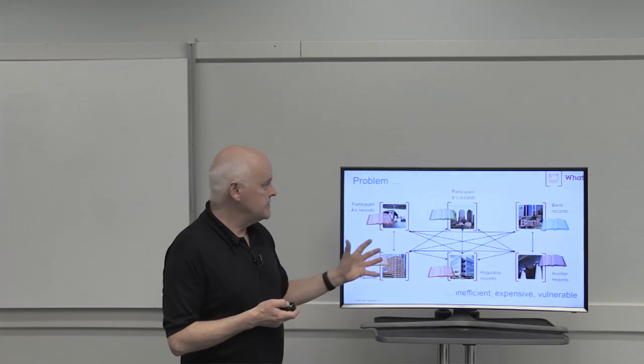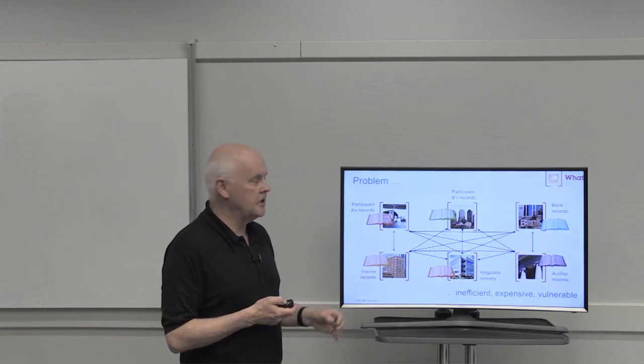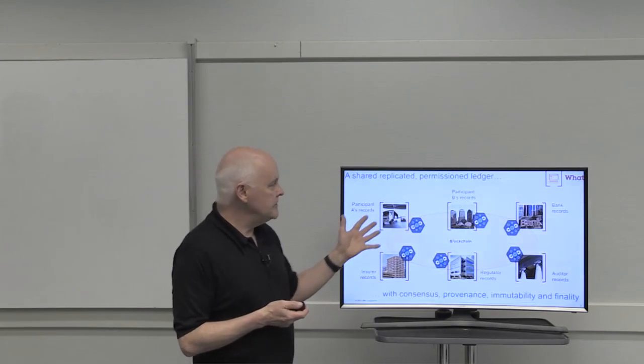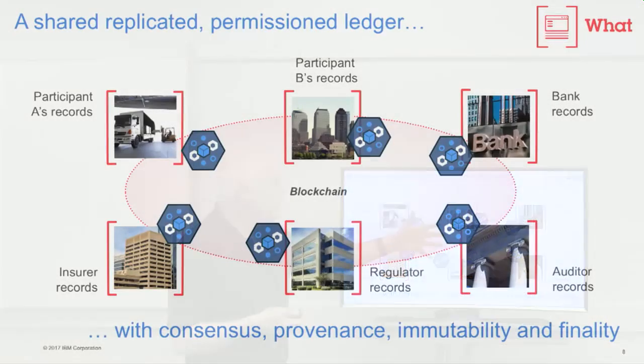So as I say, this is before blockchain comes along. If we bring blockchain into the picture, we have the situation where all of the members of the business network share a common ledger on the blockchain. The ledger is replicated through peer-to-peer replication technologies across all the different members of this business network.